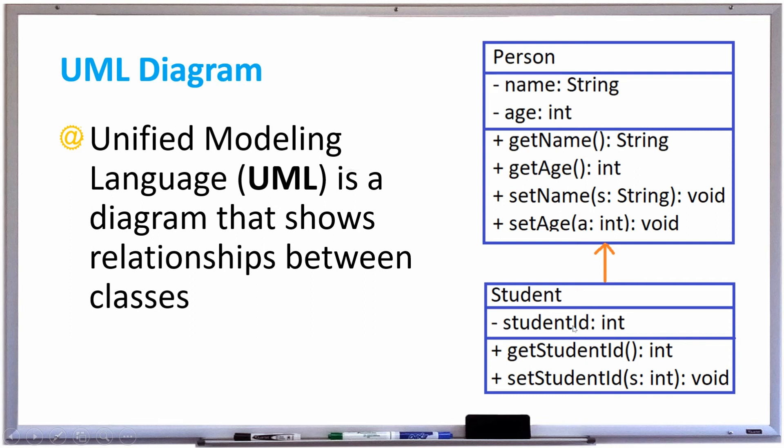The student also has, in addition to all the Get and Set name and age methods, Get and Set student ID methods as well. And that's pretty much it for a UML diagram.